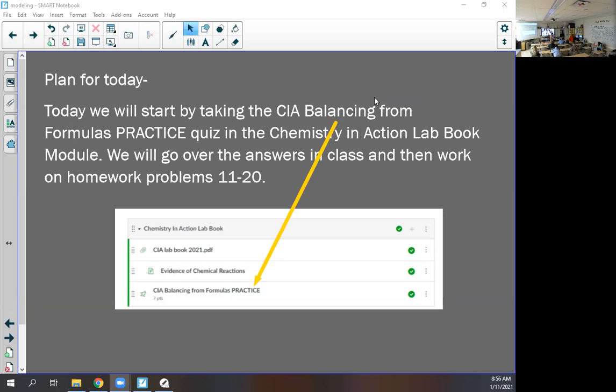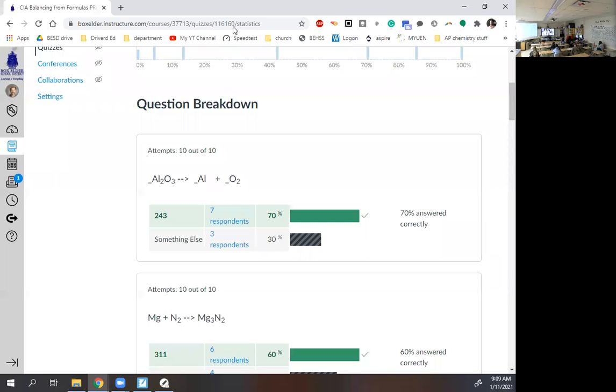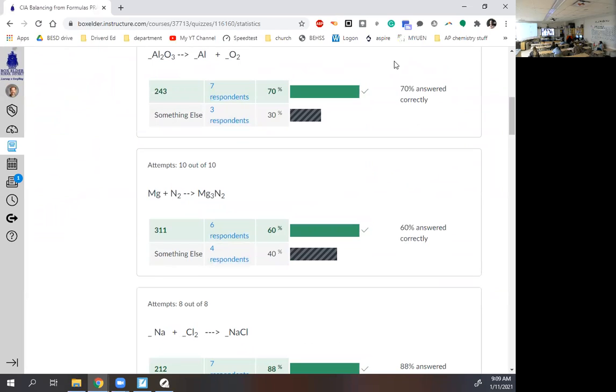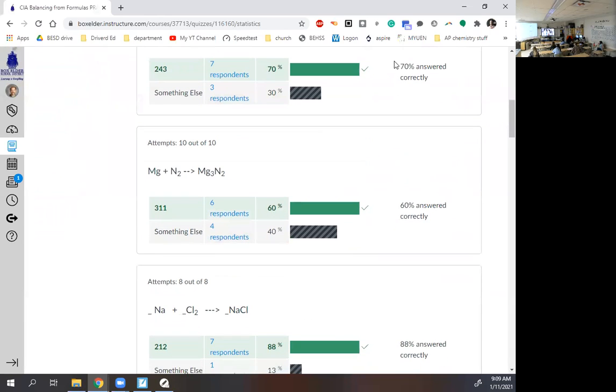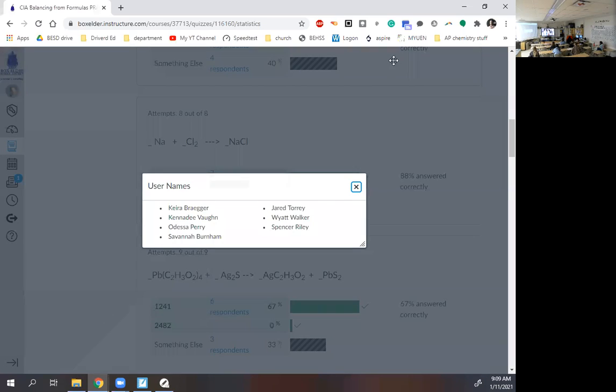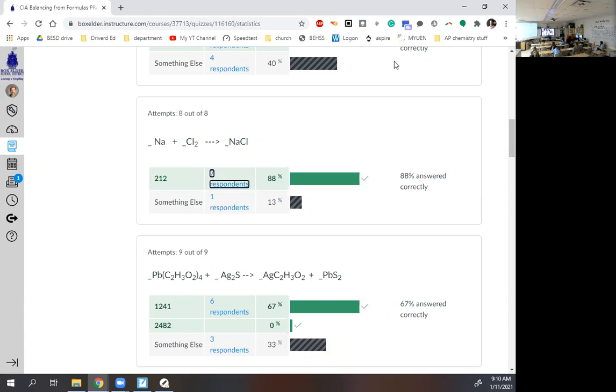Your answers will just be the coefficients, so it would be like two one two or three four three things like that. So 61% average first hour, 70% not bad, 60%. This one you need just a three in front of the MG, then a one and a one. 88% that's good. Only eight total people took it.